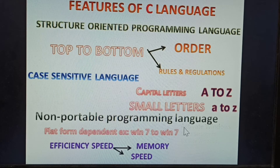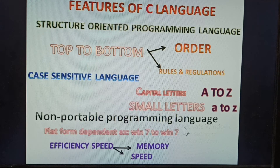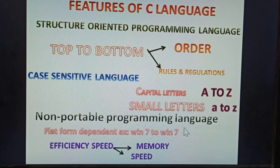So the features of C language are: structure-oriented programming language — order-wise and with rules and regulations; case sensitive language — capital letters and small letters. In previous classes, I explained how to calculate and convert into binary using the middle-level language. All of that is explained in those classes.